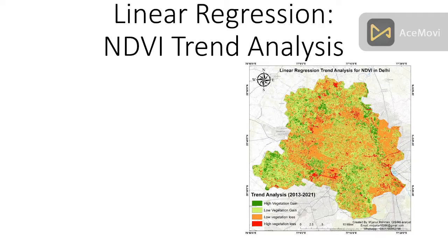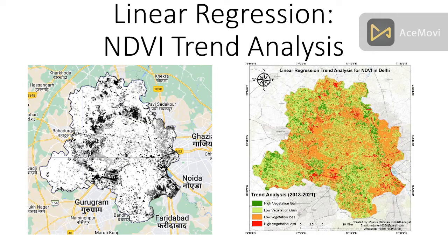For creating the linear regression, first of all we have to import the time series data. If you want to use a longer time period you also get better results. In this case we are using the year 2013 to 2021 — eight years of NDVI data — and then find out where is the high vegetation gain, where is the low vegetation gain, where is the low vegetation loss, and where is the high vegetation loss. After applying the linear regression or linear fit model we can get this type of result.